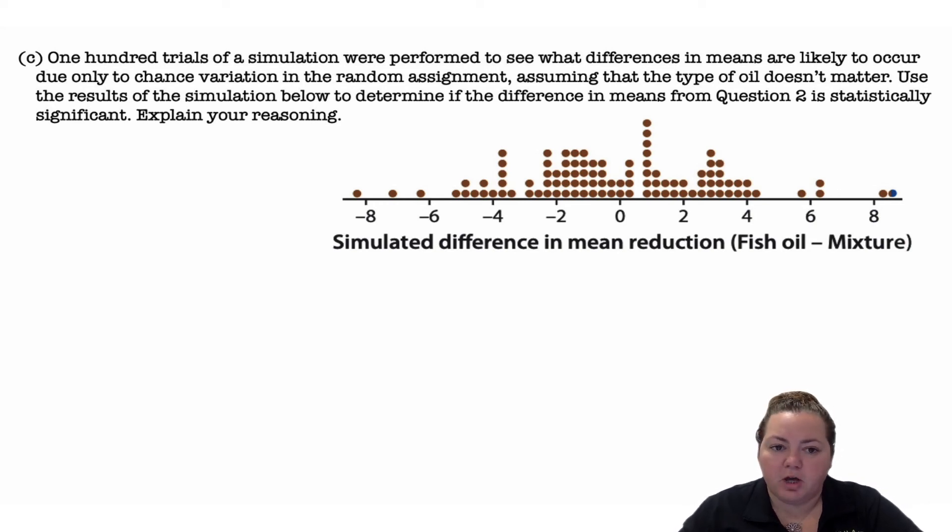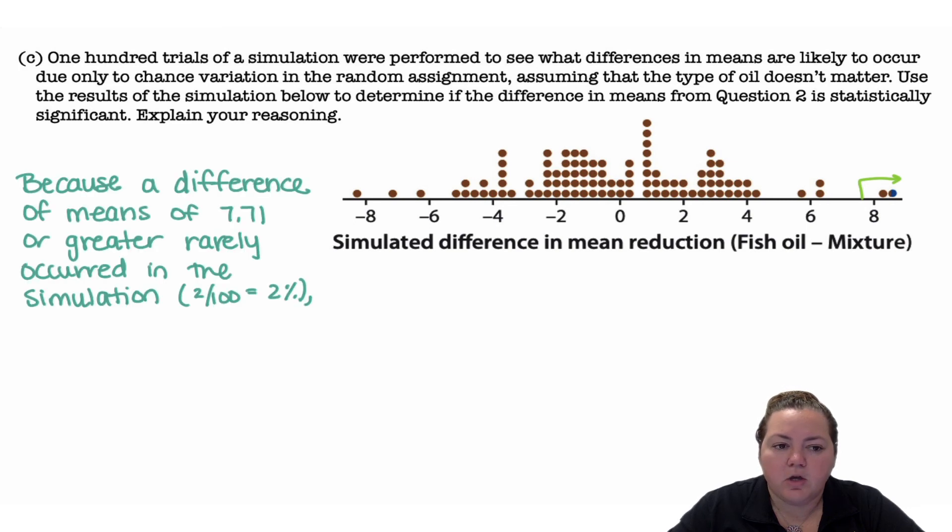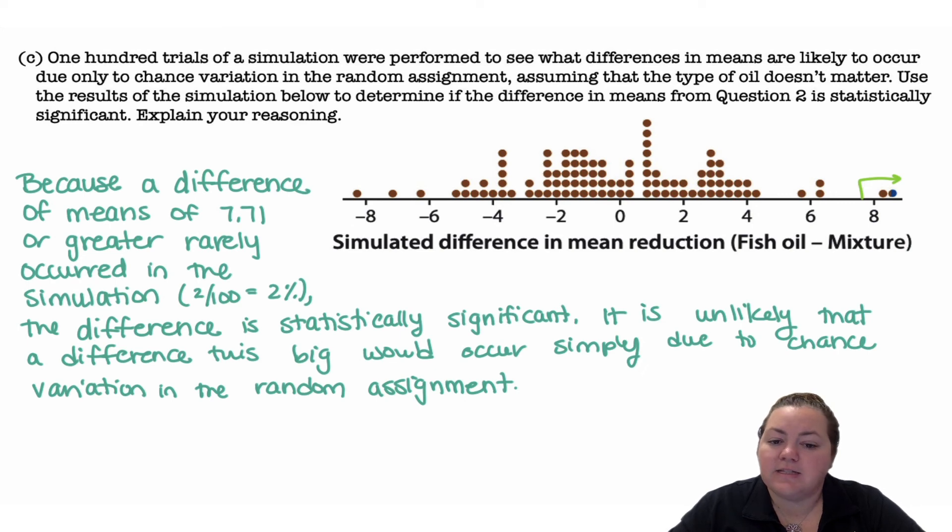Then they did it again. They shuffled them up, randomly assigned 7 to fish oil, 7 to mixture, and found the mean difference. So these are the simulated differences in mean reduction based off of our sample. So here's where 7.71 would be, and above, I drew an arrow. Because a difference of means of 7.71 or greater rarely occurs in the simulation, 2 out of 100 or 2%, the difference is statistically significant. It is unlikely that a difference this big would occur simply due to chance variation in the random assignment.